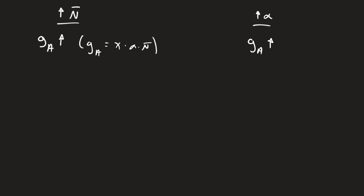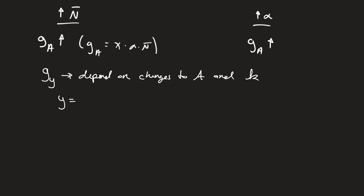What I want to remind people of is: if I'm looking at the growth of Y — the overall growth of Y — in the Romer model, it's going to depend on changes to both technology and changes to capital. The overall production function is A times K raised to some beta. So if technology is changing and capital is changing, both are going to have an impact on output.